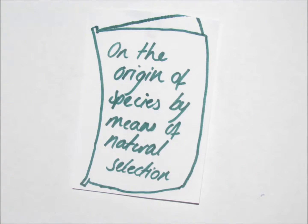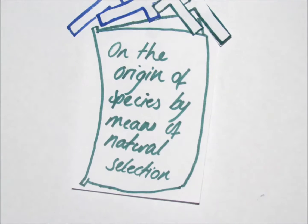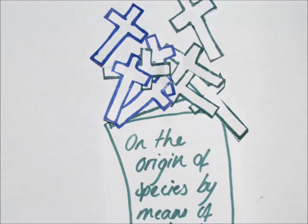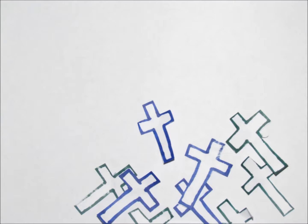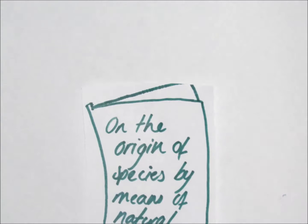This was followed by the publishing of On the Origin of Species by Means of Natural Selection by Charles Darwin in 1859. Although the book was incredibly controversial and criticized by the church, it soon gained currency and became the new orthodoxy.